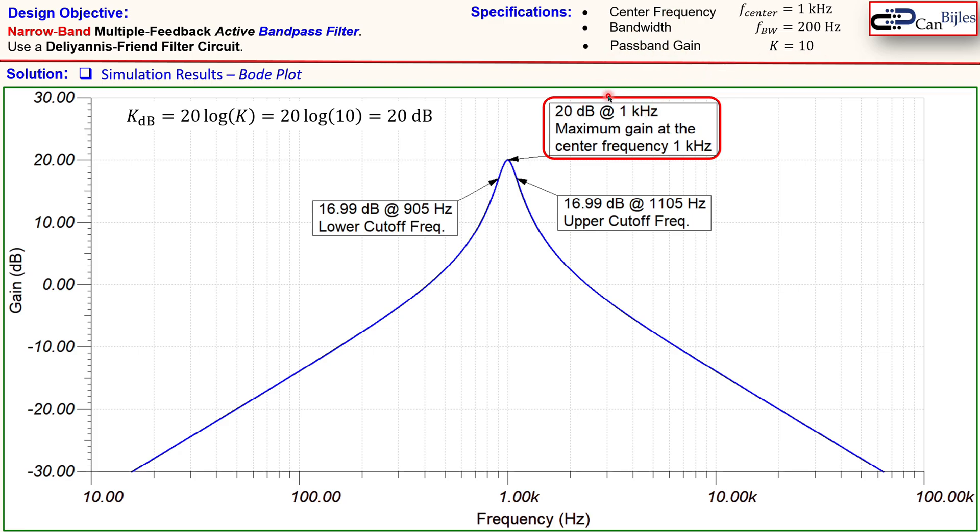The lower cutoff frequency here is calculated by going down by 3.01 dB. You see that actually this is 3.01 dB lower than 20 dB that is occurring at 905 hertz which is our lower cutoff frequency so we can also define it as or designate it as fcl.